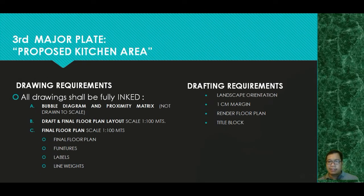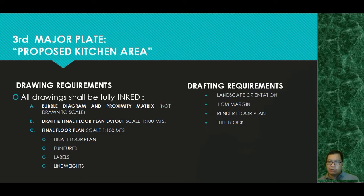For drawing requirements, all drawings shall be fully inked. You need a bubble diagram and proximity matrix — not drawn to scale — then a draft and final floor plan layout at a scale of 1:100 meters, and a final floor plan with furniture, labels, and line weights. Remember what I taught you about line weights: columns should be the thickest, walls should be thick but slightly thinner than columns, and lines for furniture, layout, and dimensions should be light. Drafting requirements include landscape orientation with a one-centimeter margin, a rendered floor plan, and a title block.